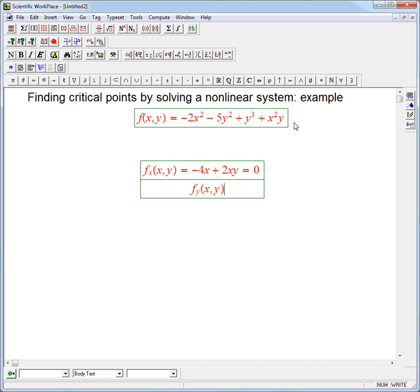We're going to look at fy, the y derivative. That's going to be minus 10y plus 3y squared plus x squared, and we're going to set that equal to 0. Another way to say this is we're setting the gradient equal to 0, or the tangent plane has to be horizontal.